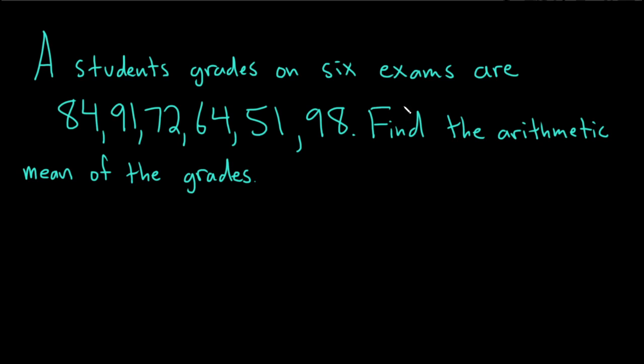A student's grades on six exams are given by the following. So we have an 84, a 91, a 72, a 64, a 51, and a 98. Find the arithmetic mean of the grades.